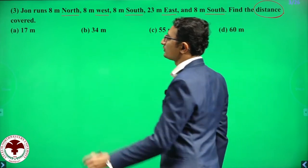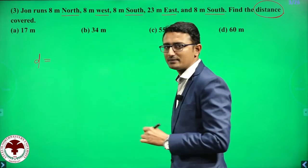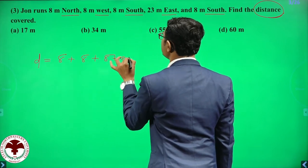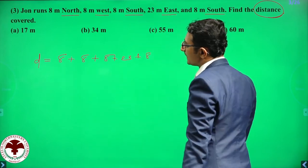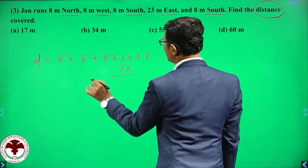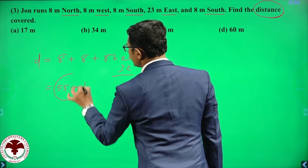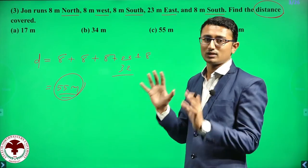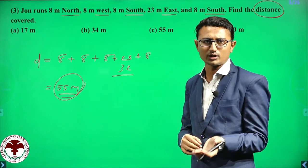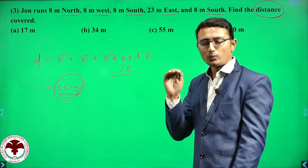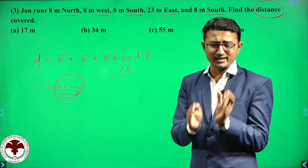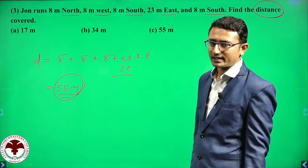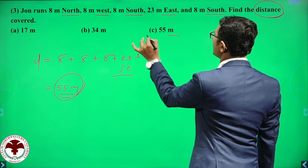Just add all the distances: 8 plus 8 plus 8 plus 23 plus 8 equals 8 into 4 equals 32, plus 23 equals 55 meter. The total distance is 55 meter — the correct option is C. The concept: whenever you calculate distance, direction does not matter; just add all distances travelled.